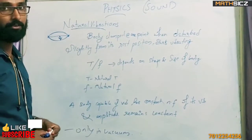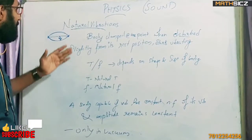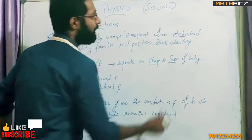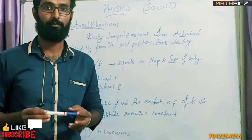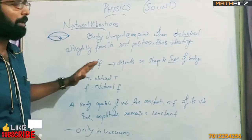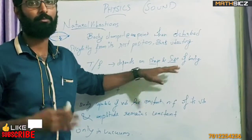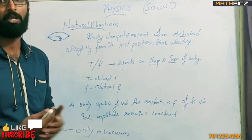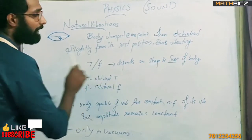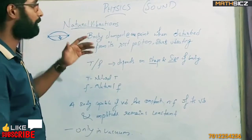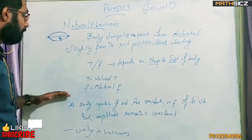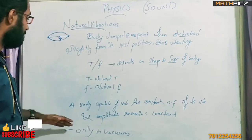We have to discuss natural vibration: its time period and frequency. The time period and frequency depend on that body's shape and size. If you have a particular body, its time period and frequency depend on its shape and size. As the body changes shape and size, the time period and frequency continue to change. A body capable of vibrating has a natural time period, which we call a natural frequency. A body capable of vibrating has constant natural frequency, and the amplitude remains constant.